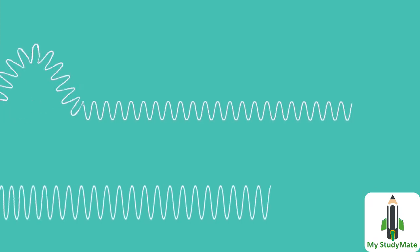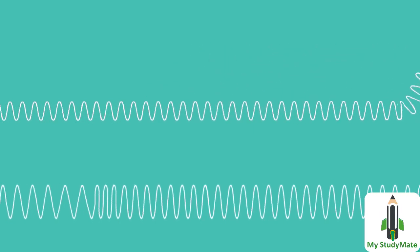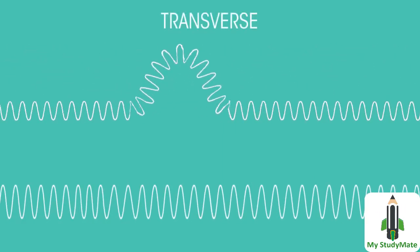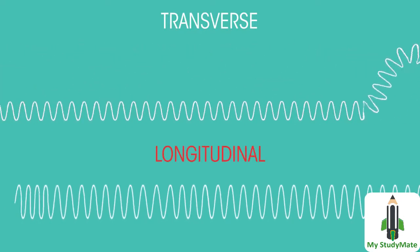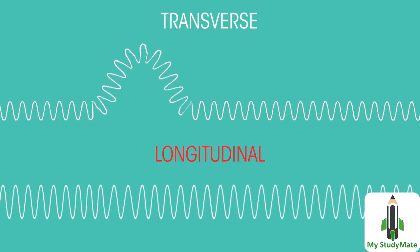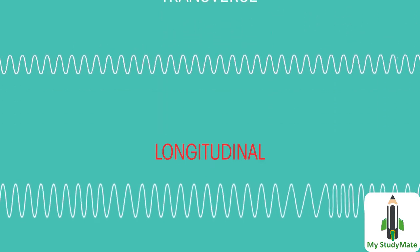Waves are produced as a result of vibrations and can be classified as transverse or longitudinal. Whether they are transverse or longitudinal depends upon how particles are made to vibrate as the energy passes.